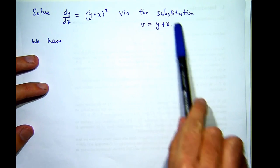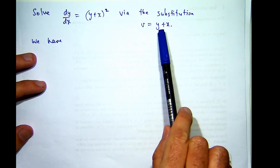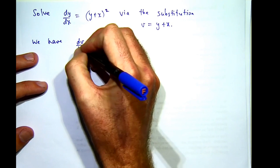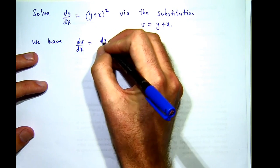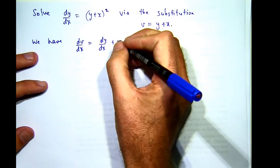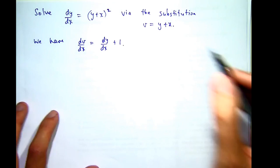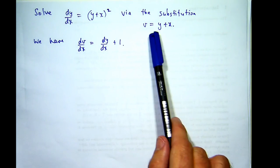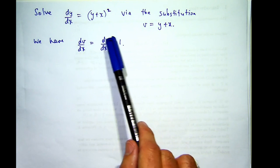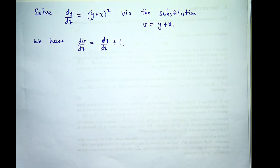So if I differentiate both sides of this, remember y is a function of x here, so v will also be a function of x. So if I differentiate this, I'll get dv/dx = dy/dx on the right-hand side, plus d/dx of x, which is just 1. So if we substitute this into the right-hand side of our differential equation, and if we rearrange this and replace dy/dx with dv/dx minus 1, then my differential equation will hopefully simplify.